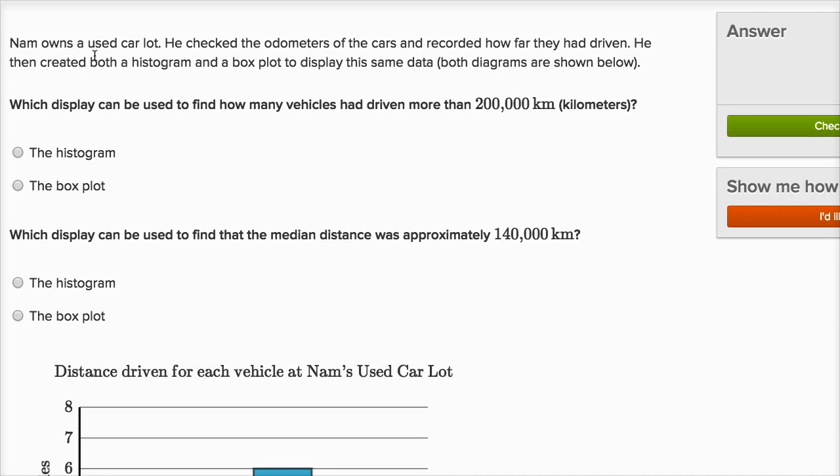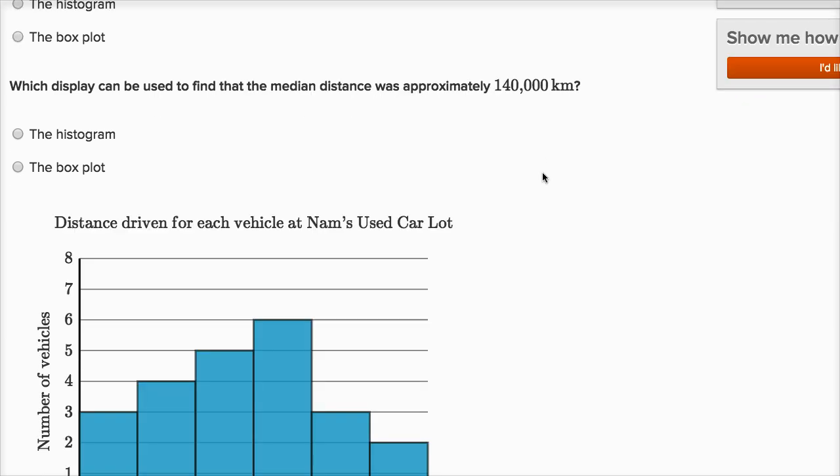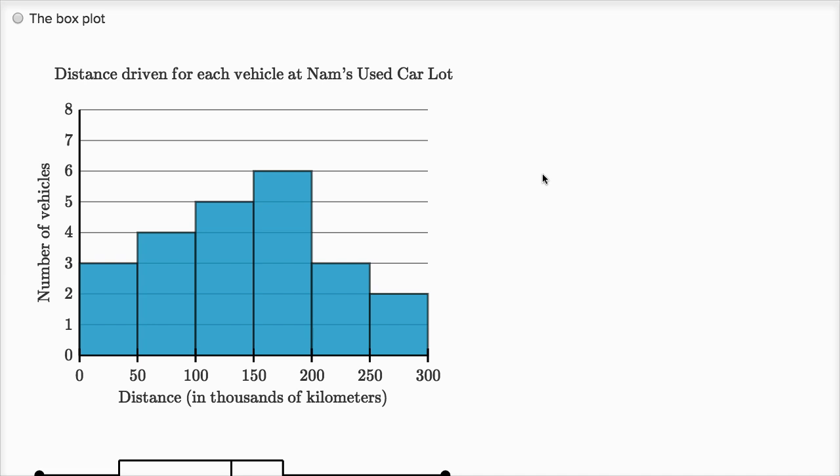Nam owns a used car lot. He checked the odometers of the cars and recorded how far they had driven. He then created both a histogram and a box plot to display the same data. Both diagrams are shown below. So which display can be used to find how many vehicles had driven more than 200,000 kilometers?